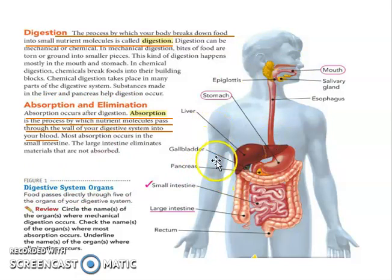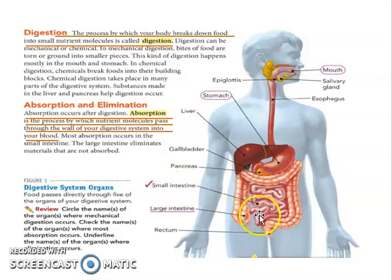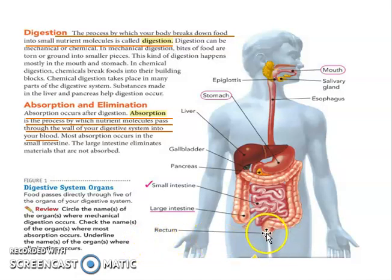In figure number one, we circle the names of the organs where mechanical digestion occurs — it happens first in the mouth, going to our esophagus and stomach. We check the organs where most absorption occurs, which begins in our small intestine. And we underline the organs where elimination occurs — the waste product is released through the rectum, which is an opening where waste, or poop in layman's term, is released.